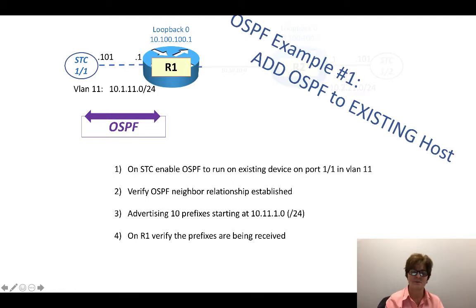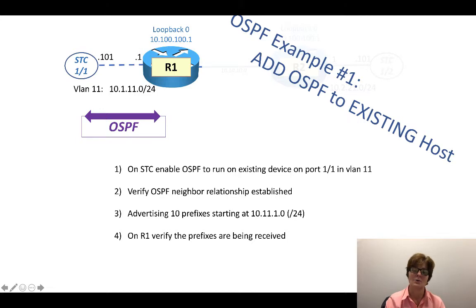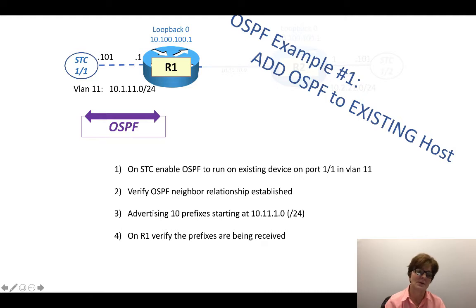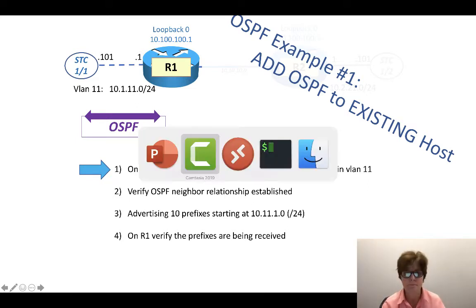For example one — adding OSPF to an existing host — I already had VLAN 11 up and running with host 10.1.11.101 on the Spirent Test Center side. The steps are: go to the Spirent Test Center and enable OSPF on that existing device, verify the OSPF relationship is established, advertise 10 prefixes from the Spirent Test Center to router one, then verify those prefixes are being received on router one.